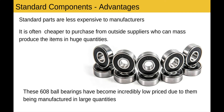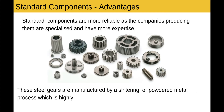Standard components — advantages. Standard parts are less expensive to manufacturers. It is obviously often cheaper to purchase from outside suppliers who can mass-produce the items in huge quantities. These 608 ball bearings have become incredibly low priced due to being manufactured in large quantities. Standard components are also more reliable, as the companies producing them are specialised and have more expertise in that smaller area. These steel gears are manufactured by sintering, or powdered metal process, which is highly specialised.